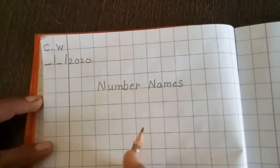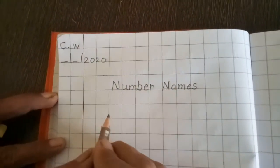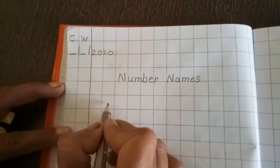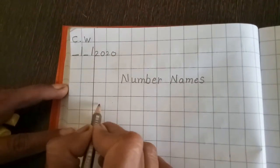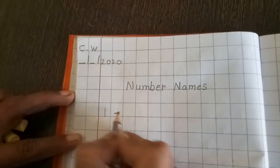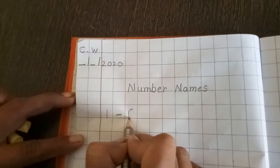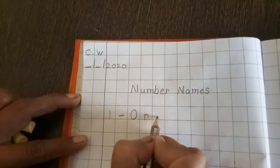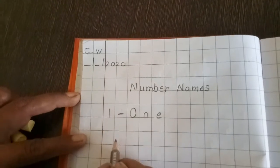Number Names. Now, we will do one to ten. You have to write here: 1 - Dash. O-N-E. One. Leave this box.